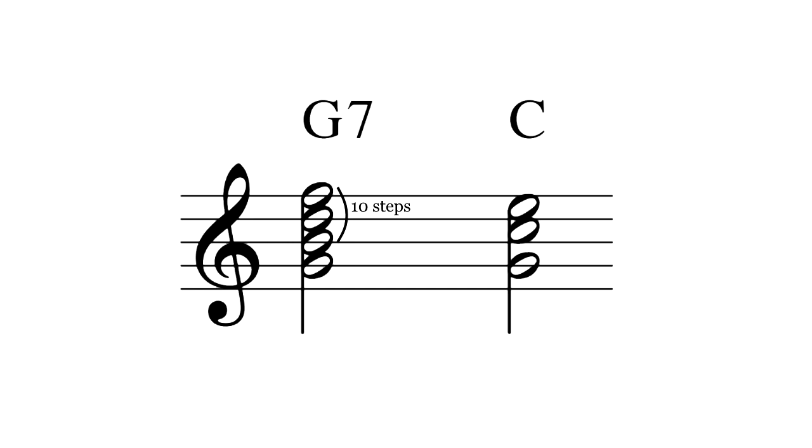The fact that 19th tet has two tritones has another interesting consequence. A tritone substitution normally works by exploiting the fact that the tritone is symmetrical, and thus shared by two dominant chords. The same idea applies in 19th tet, but with a difference.